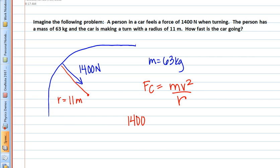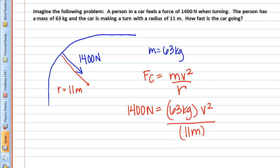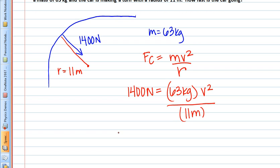We know it's a force of 1,400 newtons. We know that's equal to 63 kilograms times a velocity squared. And velocity is what we're looking for, so we'll just leave that. We'll divide this by the radius of 11 meters. As I work through the math here, I'd like you to try to determine exactly how much speed the person would have going through the circle.